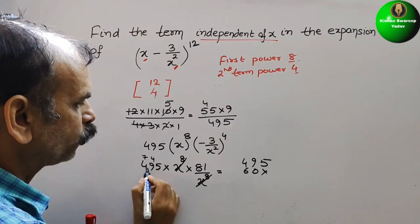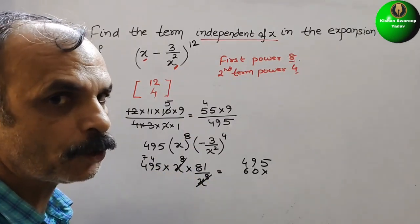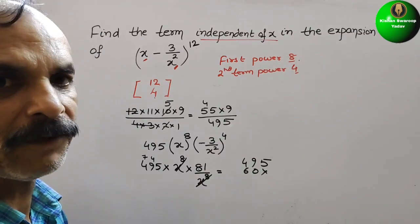8 into 9 is 72 plus 4 is 76, 7. 8 into 4 is 32, 32 plus 7 is 39.